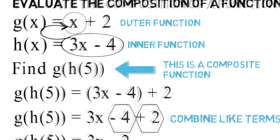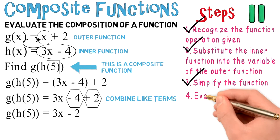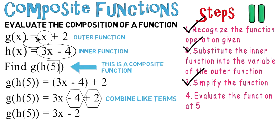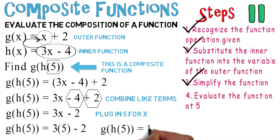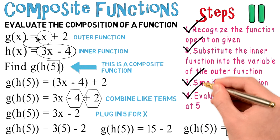Let's not forget — we have to evaluate at 5. That brings us to step number 4: evaluate the function at 5. That's a simple plug-in of 5 for x. You wind up getting G of H of 5 equals 3 times 5 minus 2, which equals 15 minus 2. Continuing to simplify, G of H of 5 equals 13. And 13 is your final answer. We can check off step number 4 and we're done.